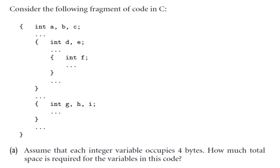Now if you look at this code, you realize that there are several blocks. This is the outermost block — this is block one. Then this is block two, which is declared within block one. Here we have block three, which is defined in block two. And finally we have block four, which is defined in block one. The indentation explains that block two and block four are defined in block one, and block three is defined in block two.